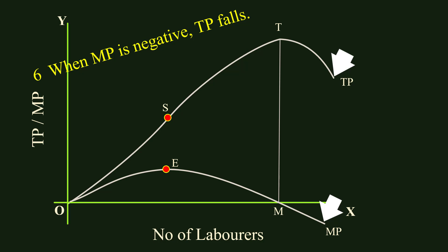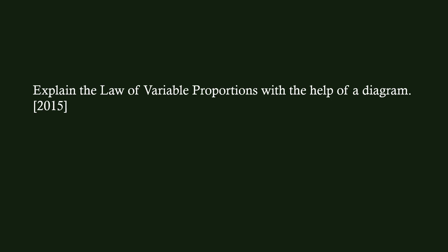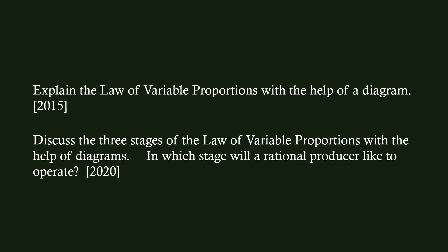Our lesson ends here. Before I conclude, let me give you a bonus tip. You can use the relation between total product and marginal product while answering questions like: Explain the law of variable proportions with the help of a diagram; Discuss the three stages of the law of variable proportions with the help of diagrams; In which stage will a rational producer like to operate? — or any other question on the law of variable proportions. We shall meet in the next lesson.